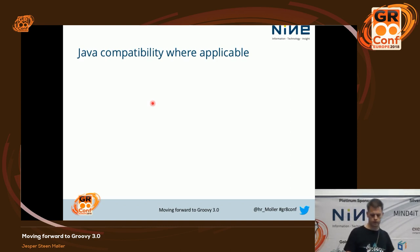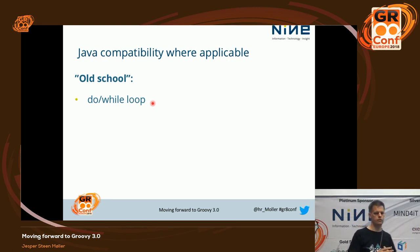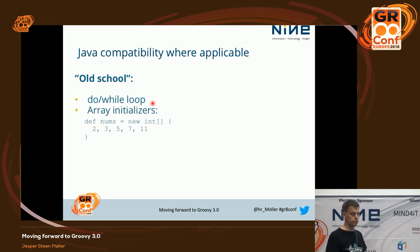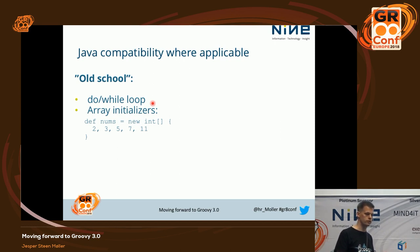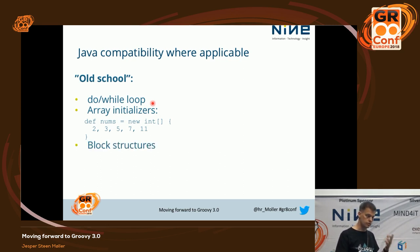Daniel has been working on Java compatibility where applicable. Things like old-school do-while loops — they didn't have that in Groovy, and it doesn't break anything to introduce it. Array initializers — sometimes copy-pasted code has those, and it's pretty clear what it does. Yes, there's a Groovy alternative; we should probably tell people to add that to their CodeNarc settings. But you can do this without breaking anything.